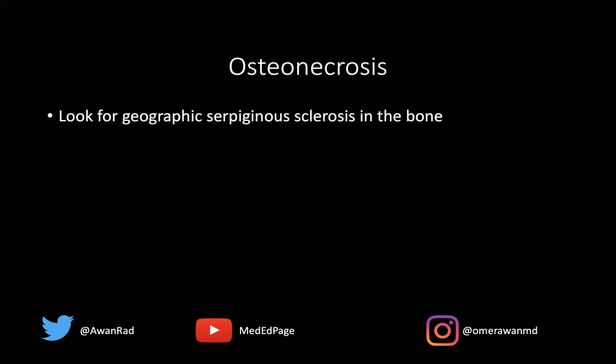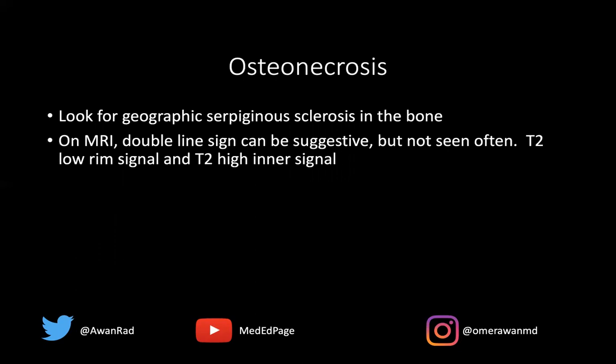The key feature on imaging is to look for that geographic serpiginous sclerosis in the bone — that's the typical key for osteonecrosis. On MRI, the double line sign can be very suggestive, though it's only seen in maybe 10% to 20% of cases. You typically have a T2 low rim and a T2 inner brighter signal. The key on MRI is really to look for preservation of fat — if you see geographic abnormal signal with normal fat in that region, that's highly indicative of osteonecrosis or AVN.